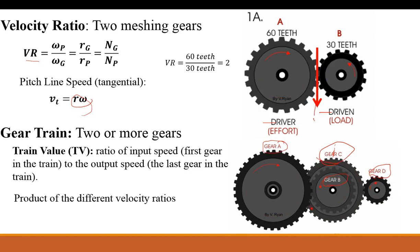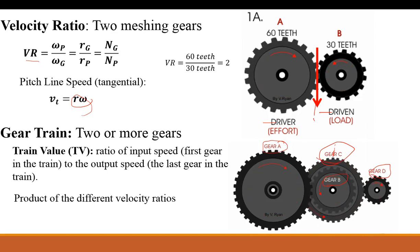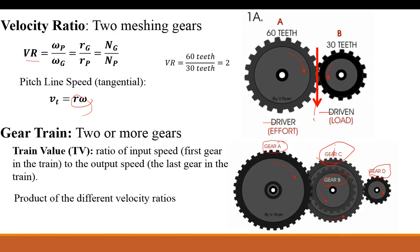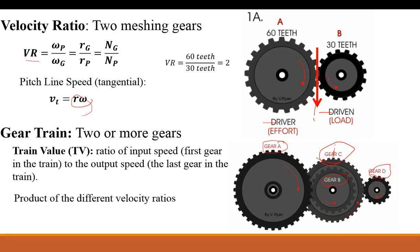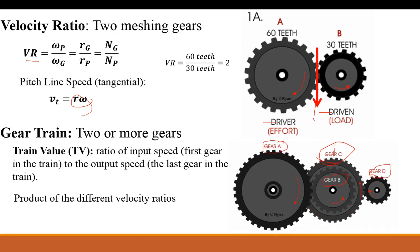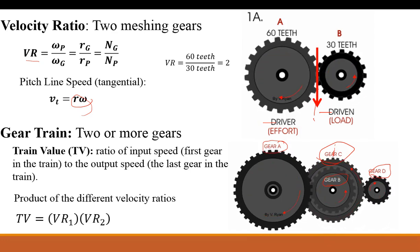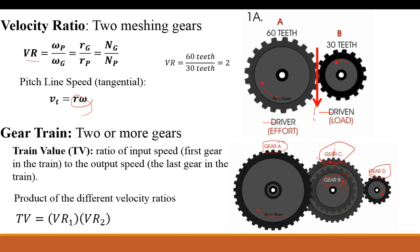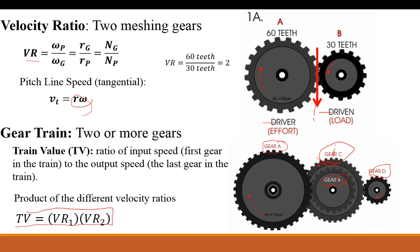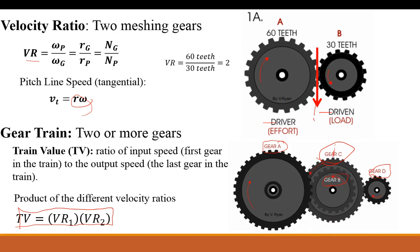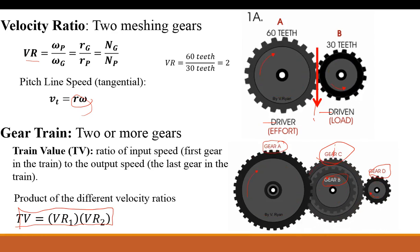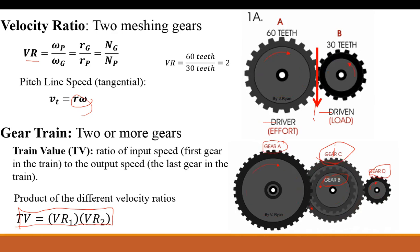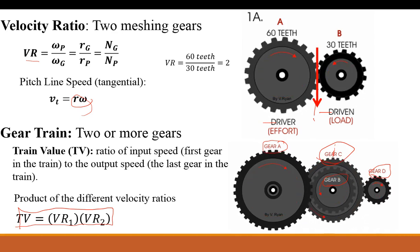The train value gives you another calculation you can use to design your gear train for a desired effect. You calculate it as the product of the different velocity ratios. In this case you'd have a velocity ratio between gear A and gear B, and a velocity ratio between gear C and gear D. You take the different velocity ratios and multiply them together to get the train value. Once you know the train value, you can use it to understand what your system will do and manipulate it — adding teeth, using a different velocity or diameter — to get the output you're after.